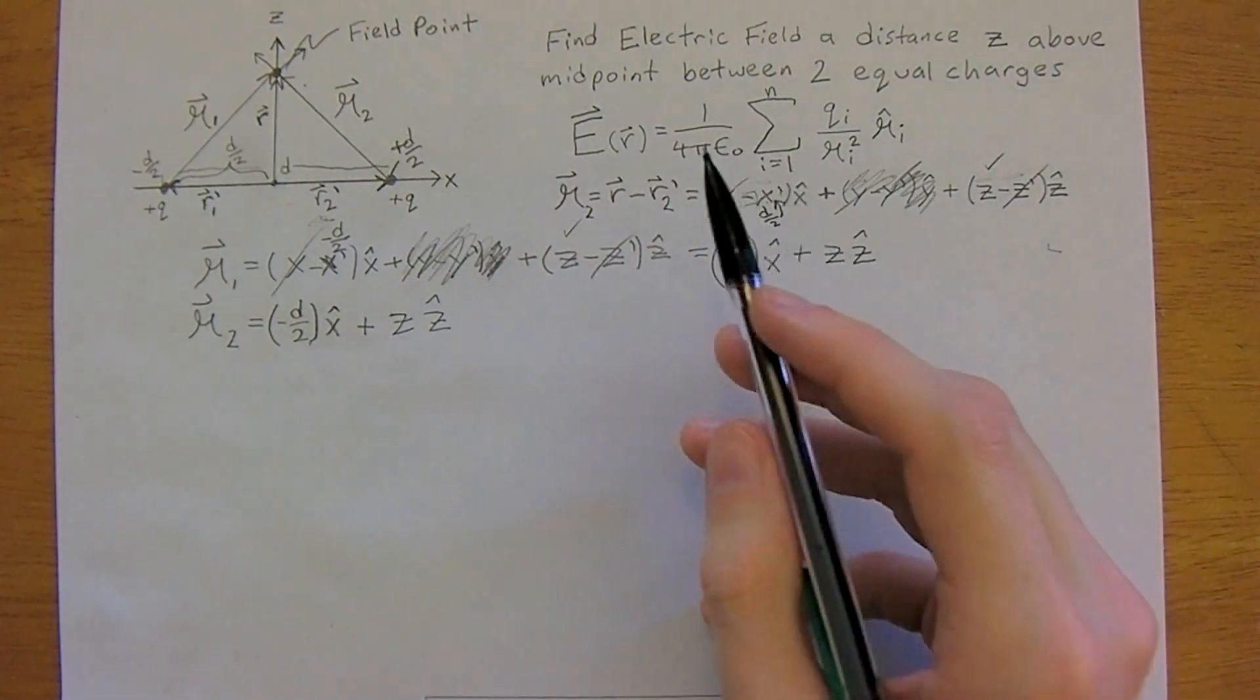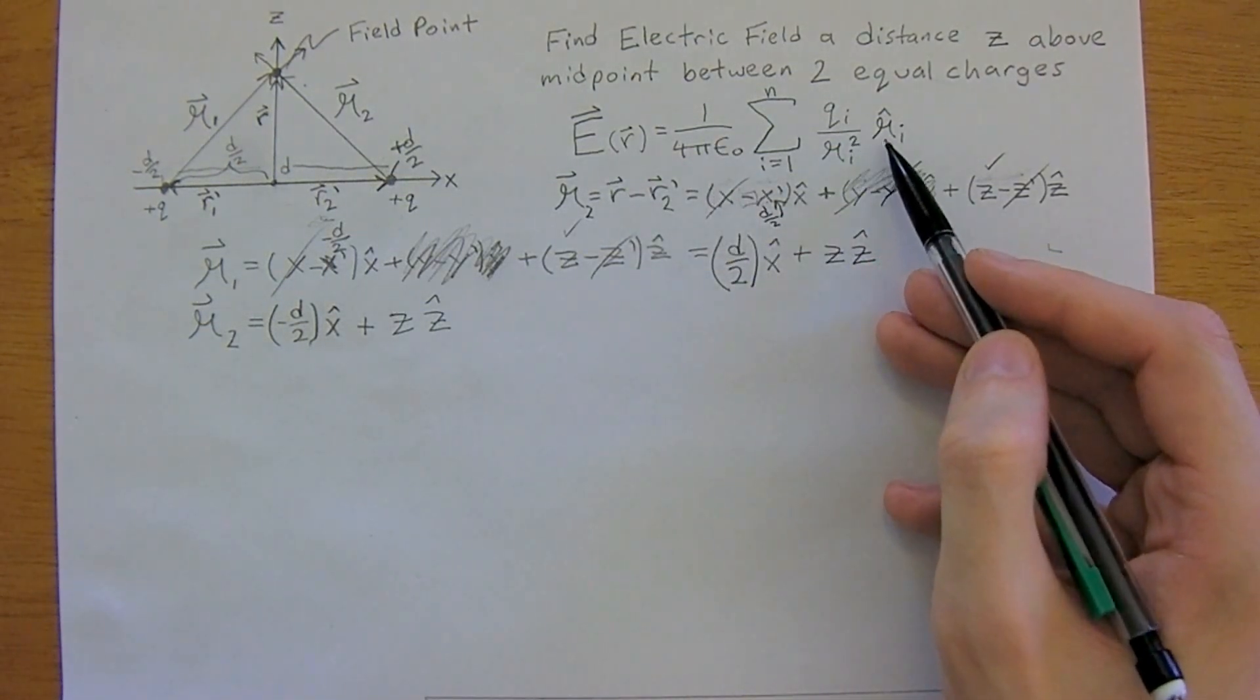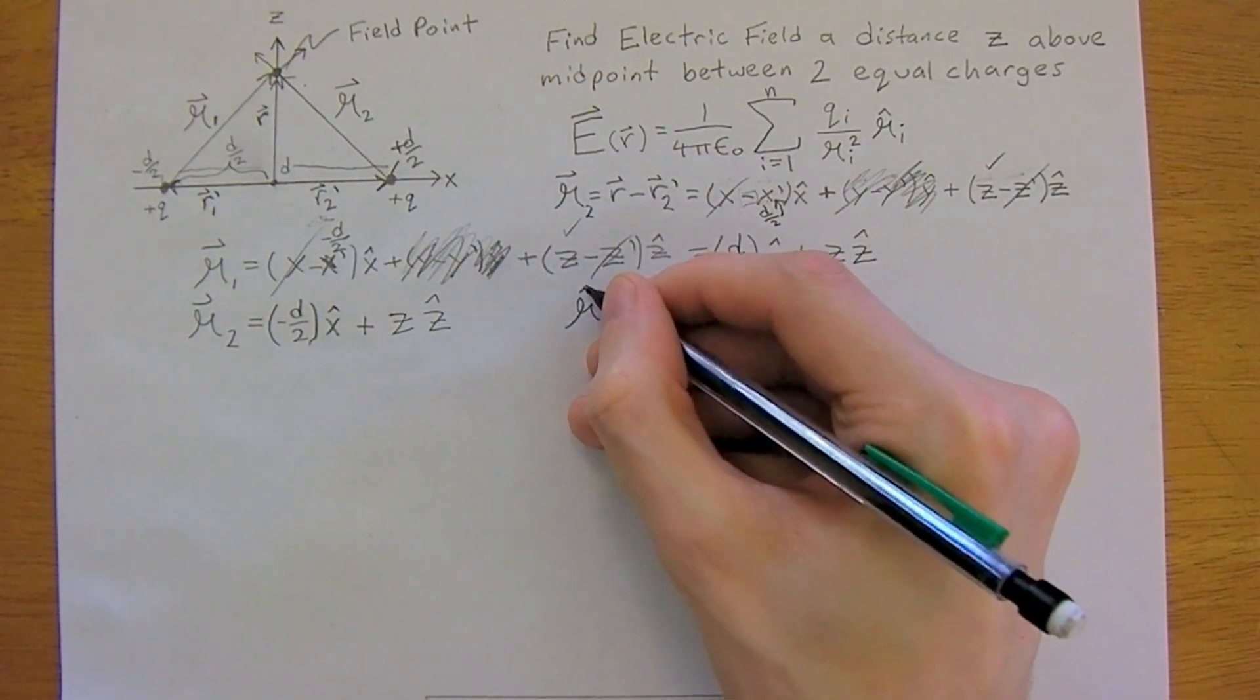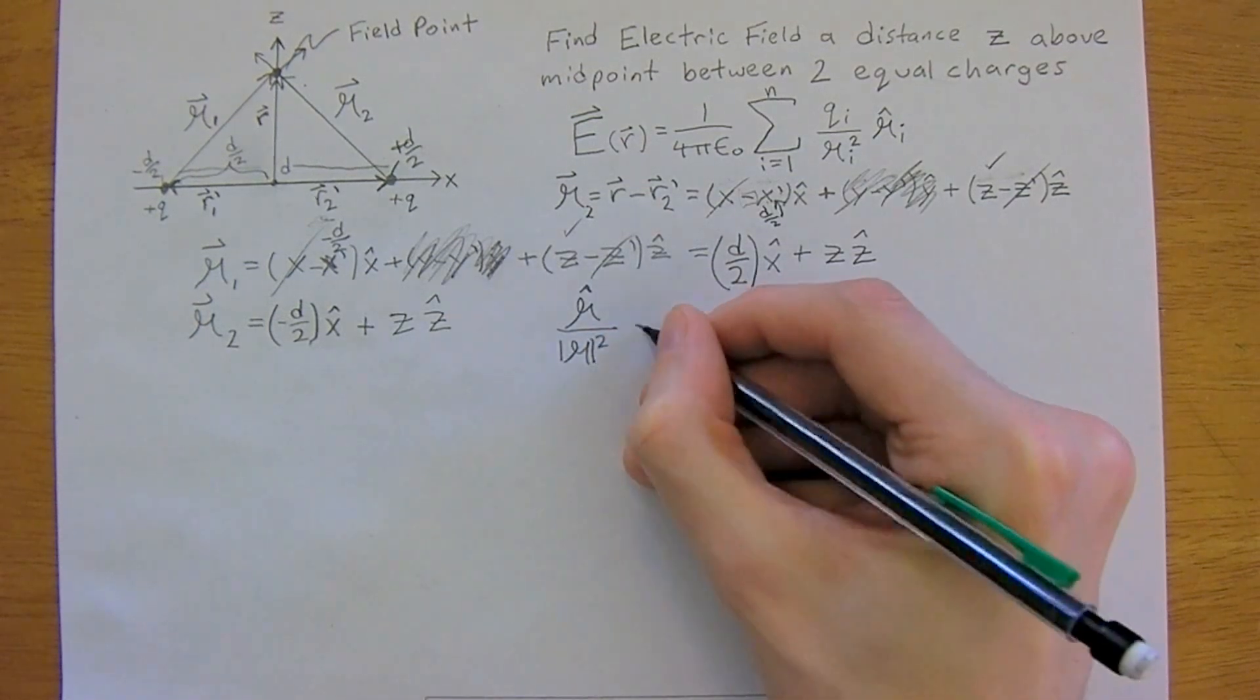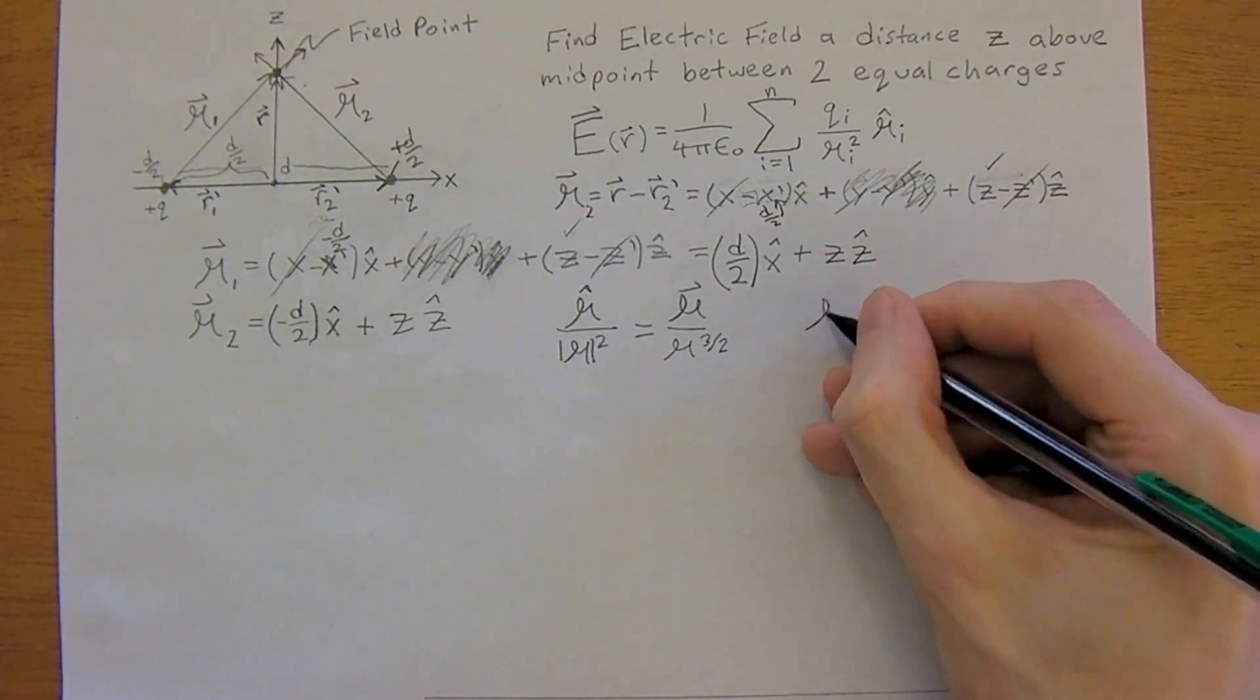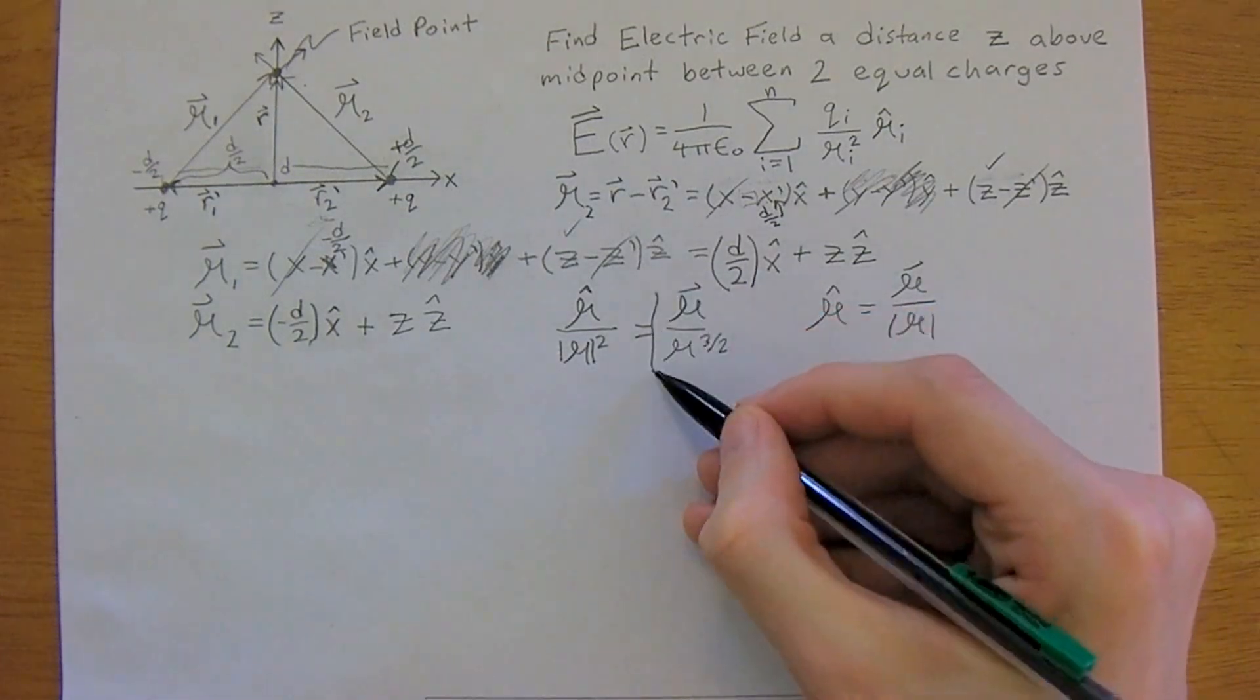So we have what we need now. We're now going to work with superposition. So we have e is 1 over 4 pi epsilon 0 of q, script r hat, divided by script r hat squared. And the other important thing to know is that a univector divided by a magnitude squared is equal to a vector over r to the 3 half power. Because remember, a univector is your vector divided by magnitude. And so that is where this comes from.